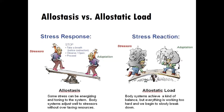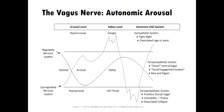Allostasis and allostatic load is important for us to learn about because if a person is under undue stress, it causes adaptations that can be very problematic. We'll talk about what happens when the body and brain is out of balance. For example, we'll look at the difference between a regulated nervous system and a dysregulated nervous system, and what happens with the vagus nerve and autonomic arousal that becomes dysfunctional — such as freeze responses and extreme fight or flight, often called approach-avoid responses.